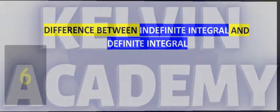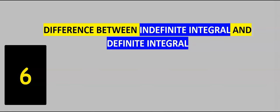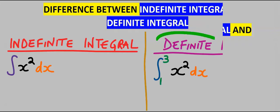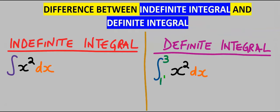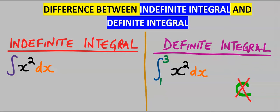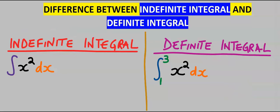Let's consider the difference between indefinite and definite integral. A definite integral usually has a starting point and an end point, and the final result will not include plus C because it cancels out. However, for an indefinite integral — which does not have a beginning and an end point — the final result will always end with a plus C.